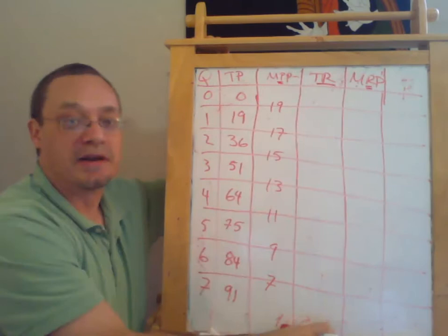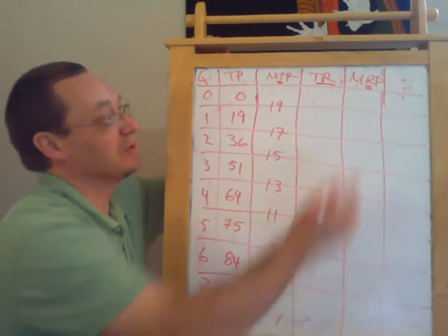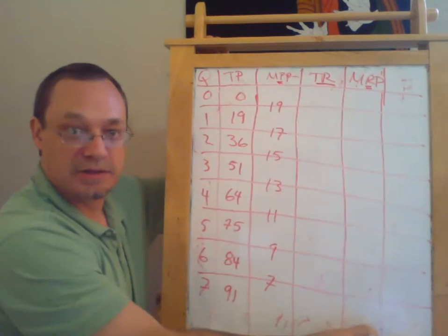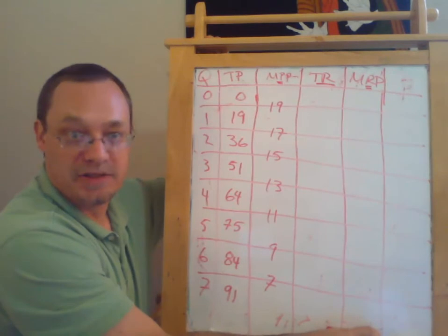So marginal physical product measures how many actual physical units you added to production. Marginal revenue product measures how much you added to revenue. And remember here, this is all else equal.